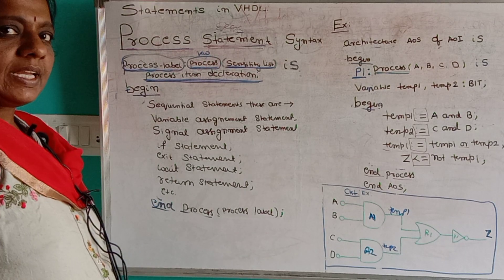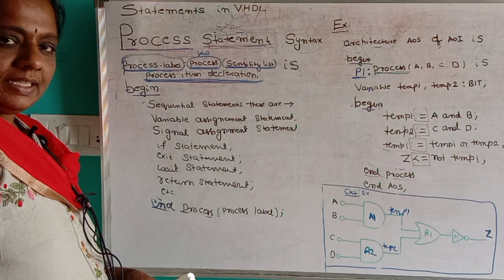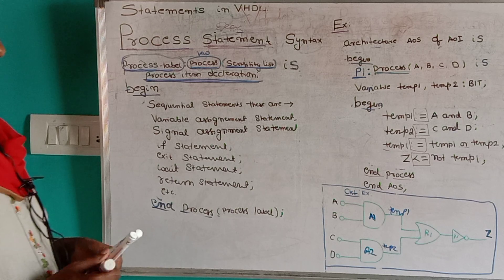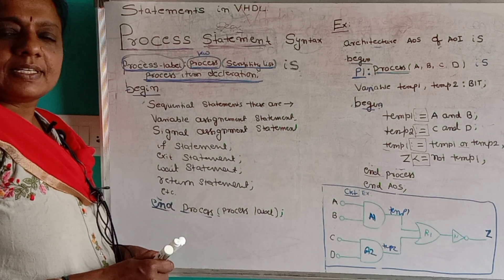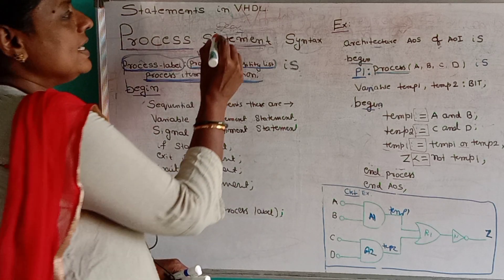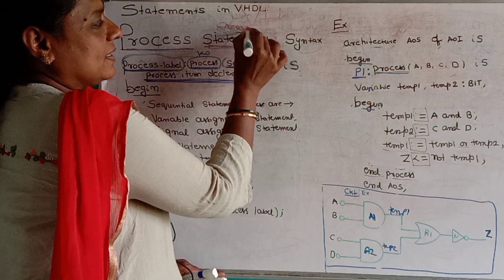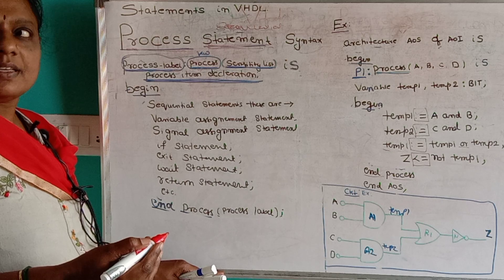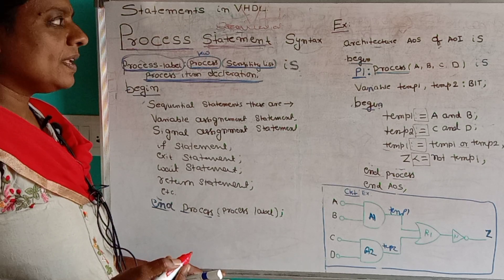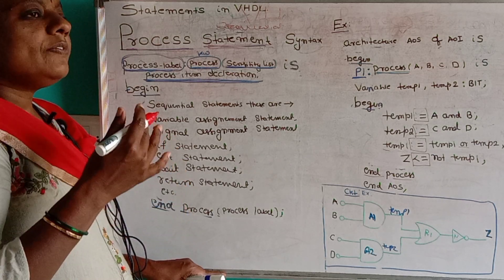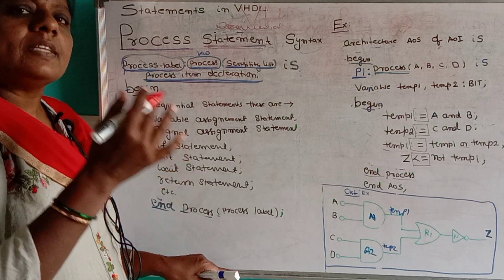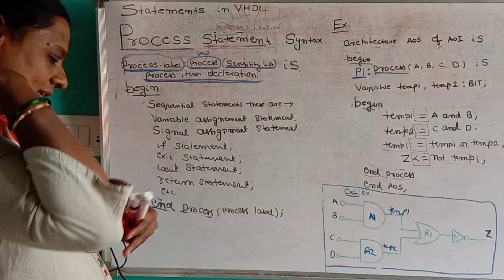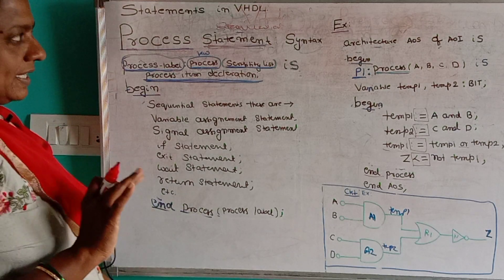Dear students, today let us study the process statement available in VHDL. What is the process statement? The process statement is a sequential statement. What do you mean by sequential statement? If the statements are executed line by line, then they are called sequential statements.